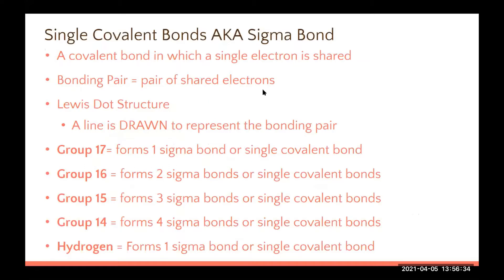We're going to use a graphic organizer to talk about this. A single bond is a covalent bond in which a single electron is shared per element. Looking back at our rubber band example, fluorine with one electron and fluorine with one electron — one electron was shared per element for a total of two shared electrons, so that line represents a bonding pair of shared electrons.